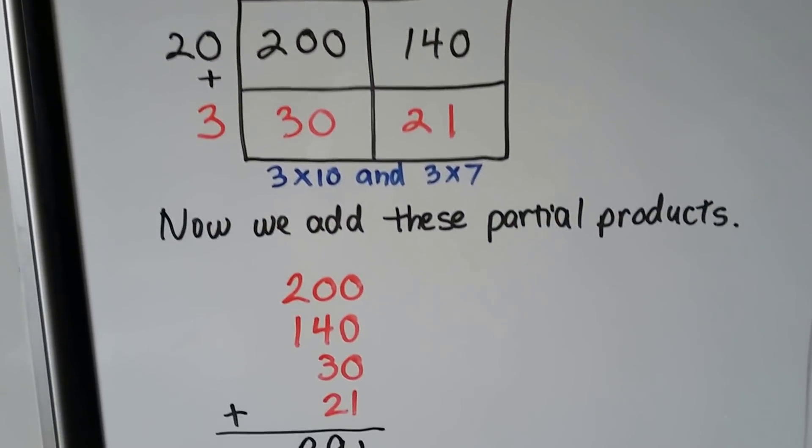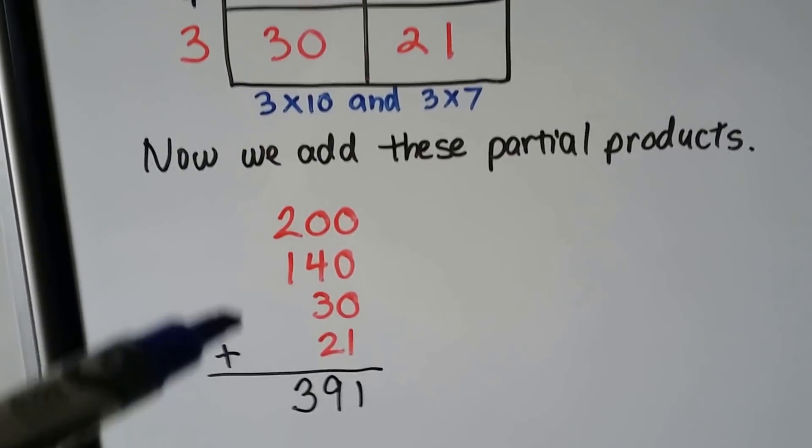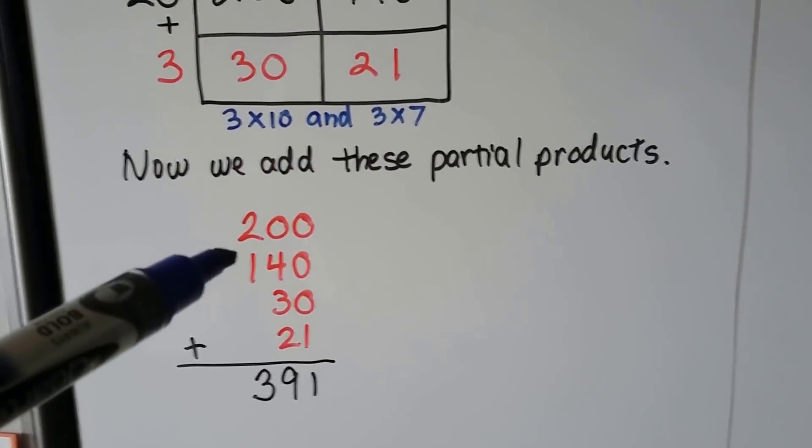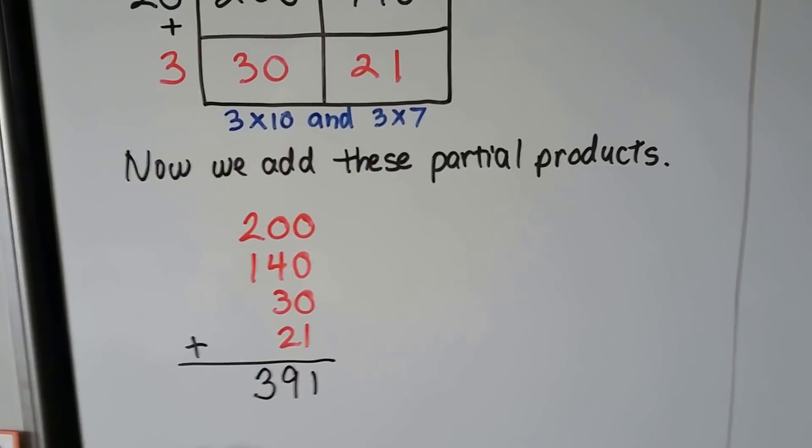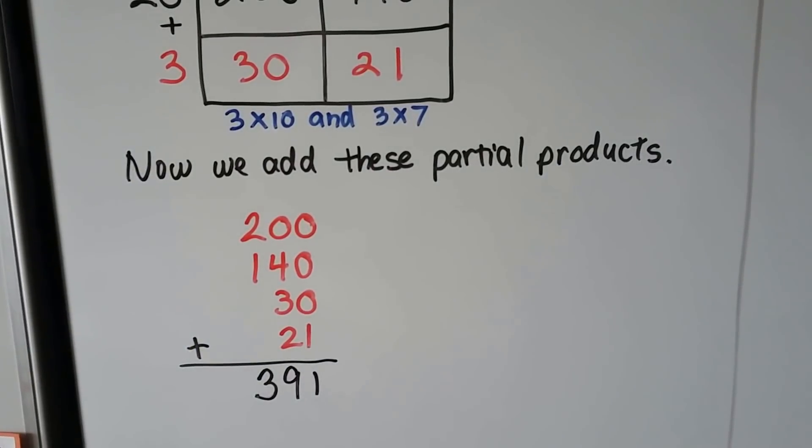Now we add these four partial products together. We have 200, we have 140, we have 30 and 21, and we get 391.